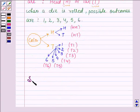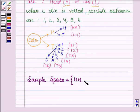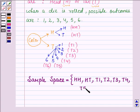So, let's now write down the sample space. Having these sample points, it is equal to HH, HT, T1, T2, T3, T4, T5 and T6.